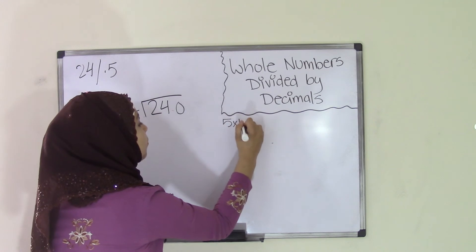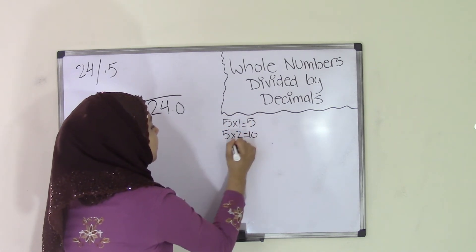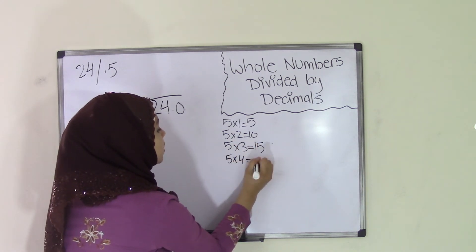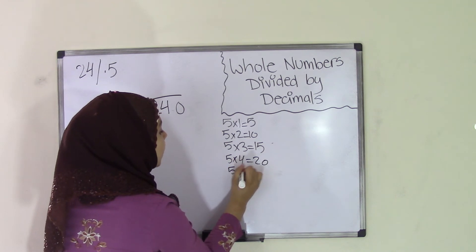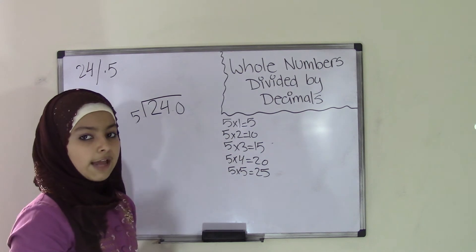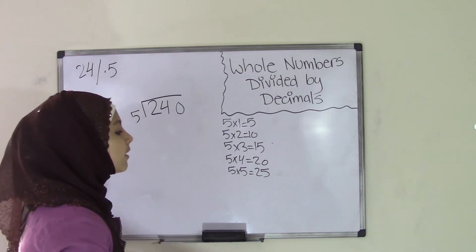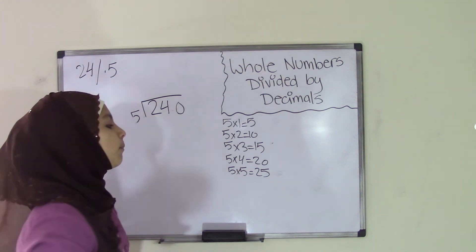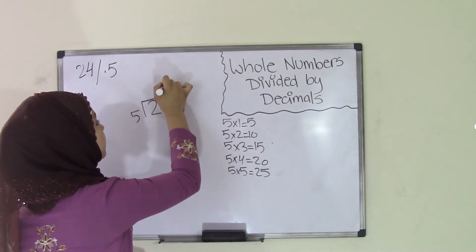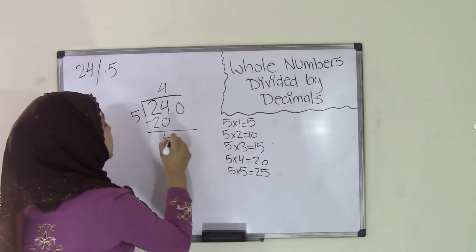5 times 1 is 5. 5 times 2 is 10. 5 times 3 is 15. 5 times 4 is 20. 5 times 5 is 25. Oh wait, 5 times 5 is 25, but 25 is greater than 24, so we can't do 5 times 5. So that means we're going to have to go to the product that we got before 25, which was 5 times 4, which is 20. So 5 times 4 is 20. 24 minus 20 is 4.